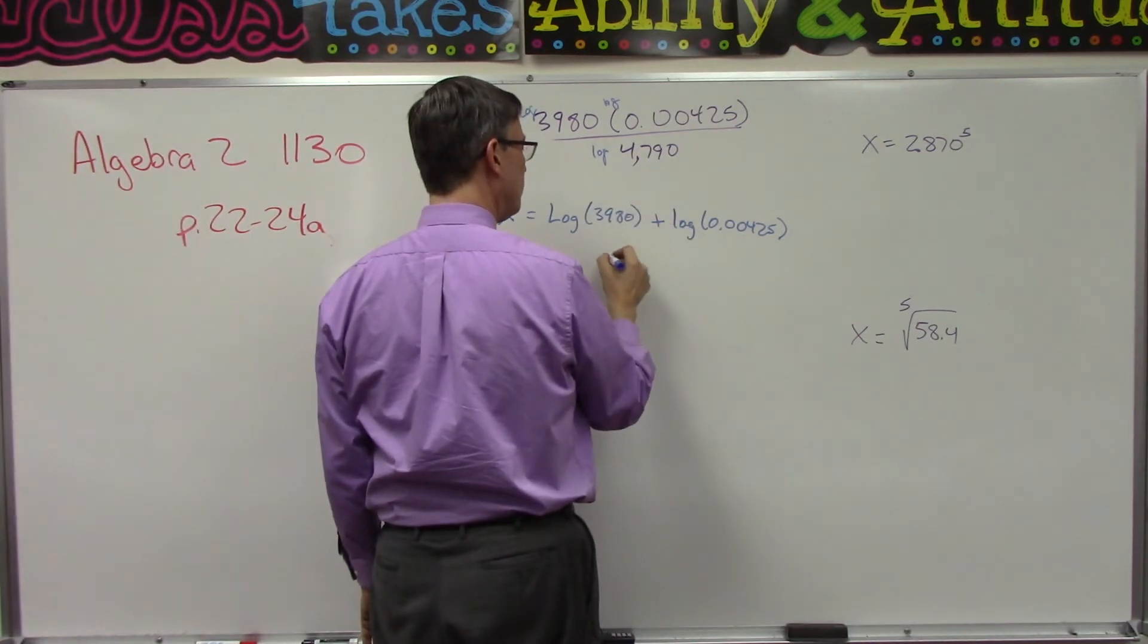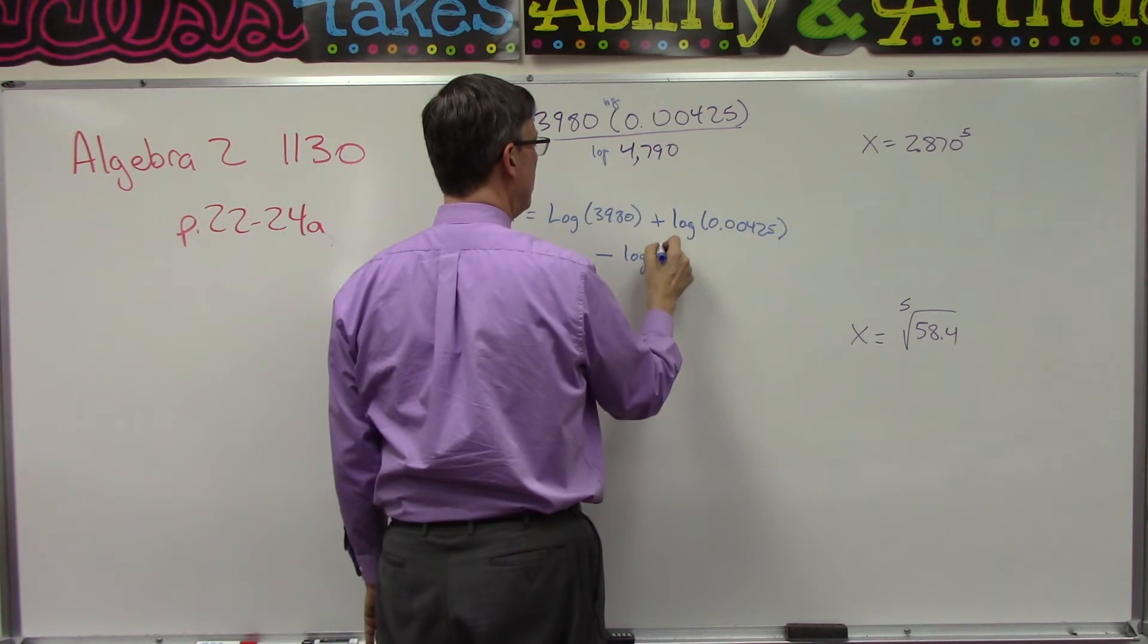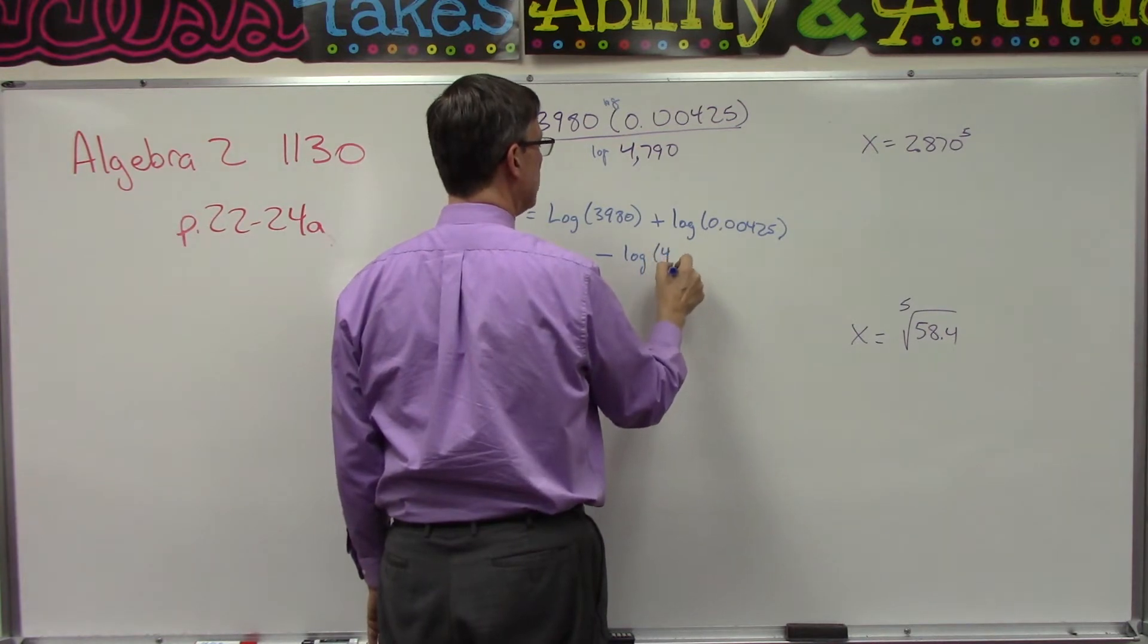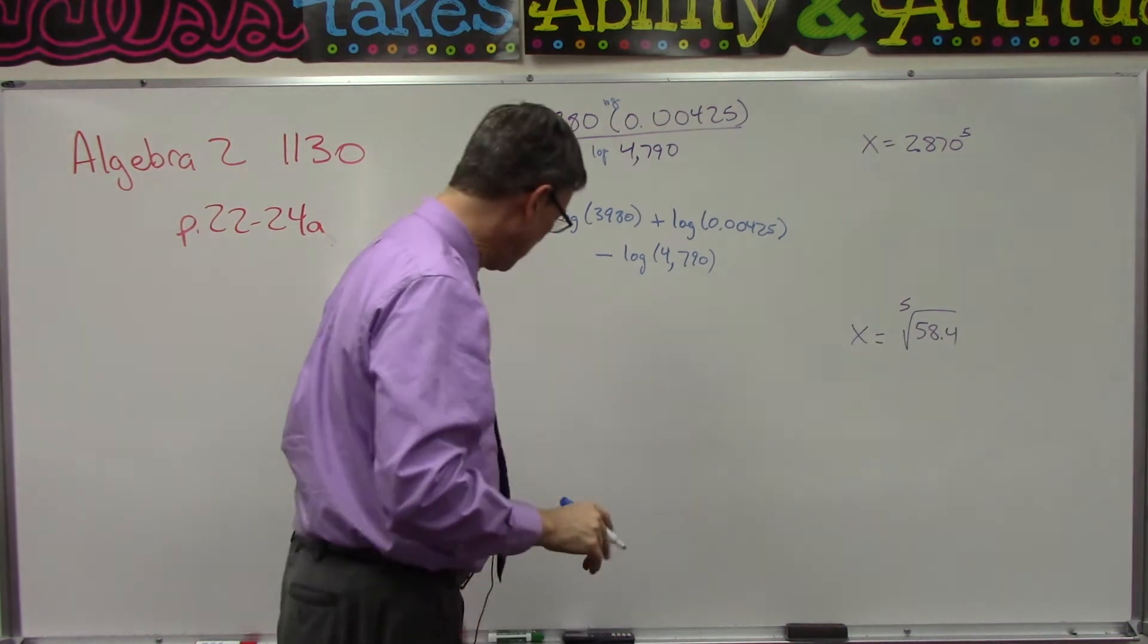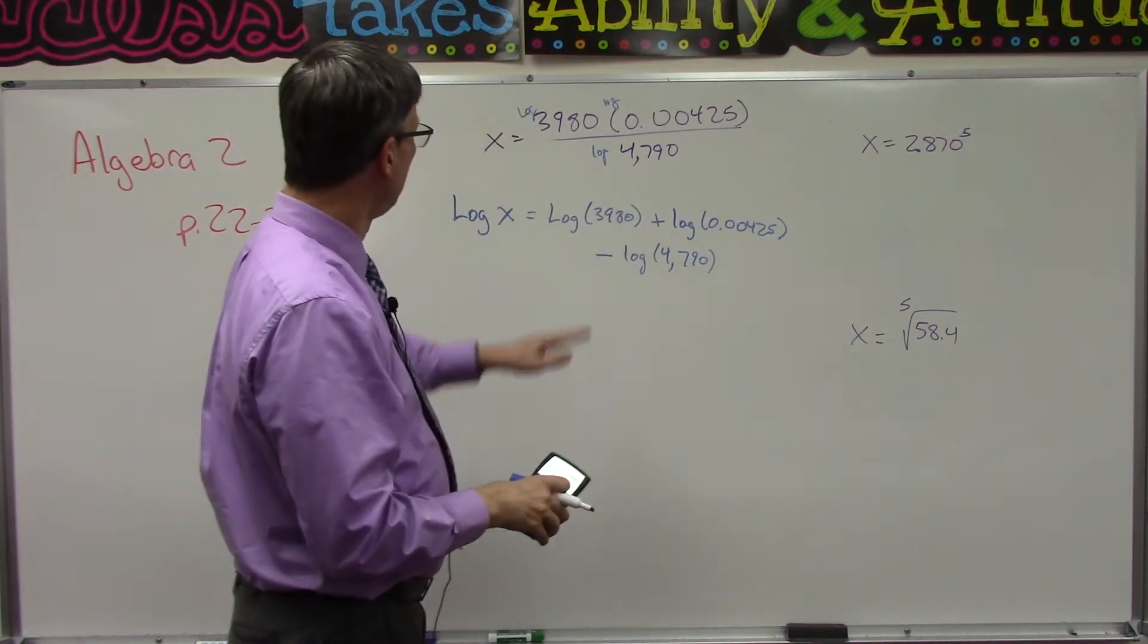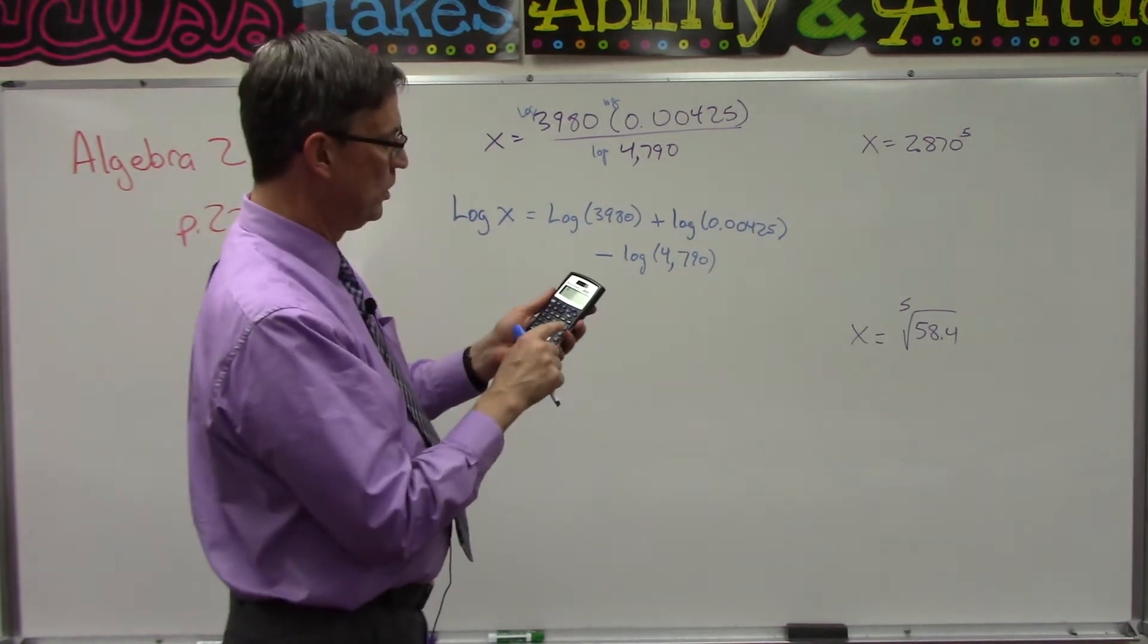And then because I'm dividing by this, I'm going to subtract the log of 4790. So let's come up with all three of these logs and we'll write them in here.